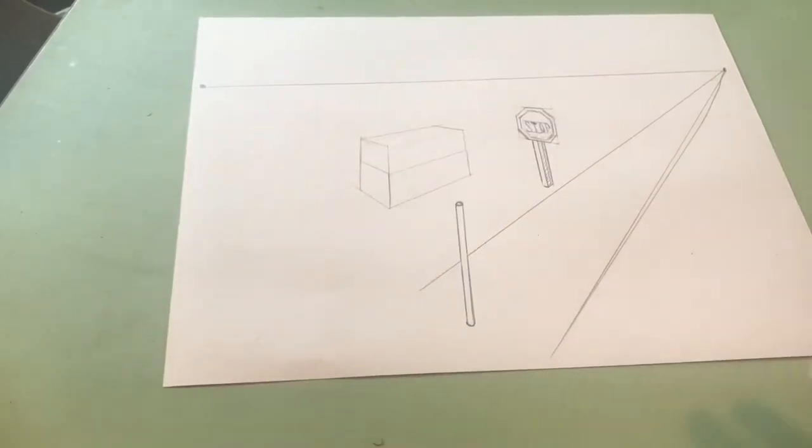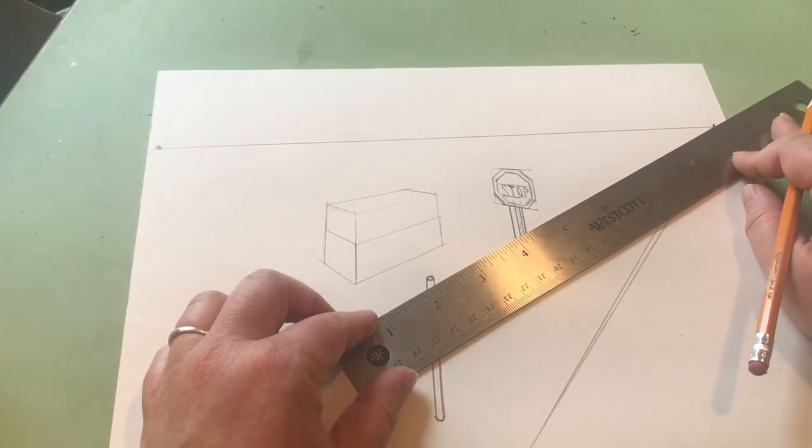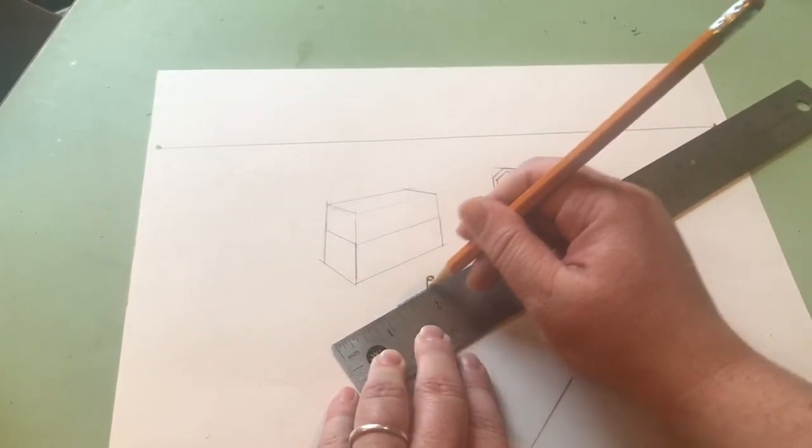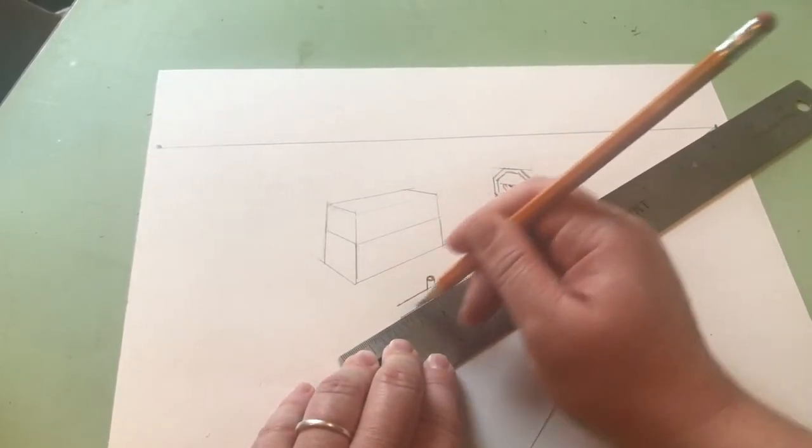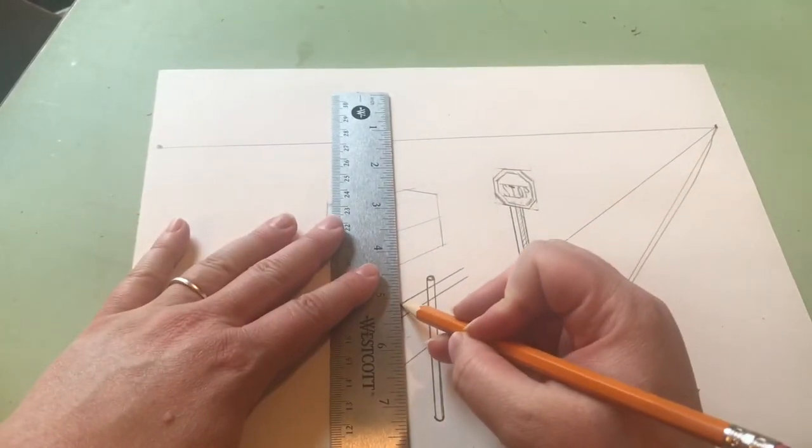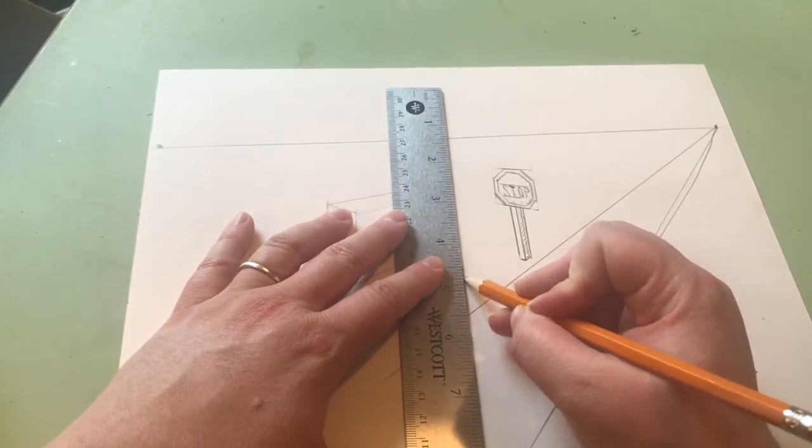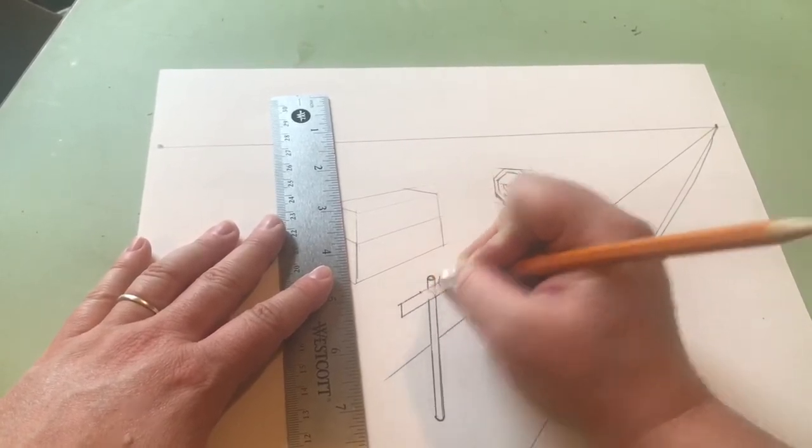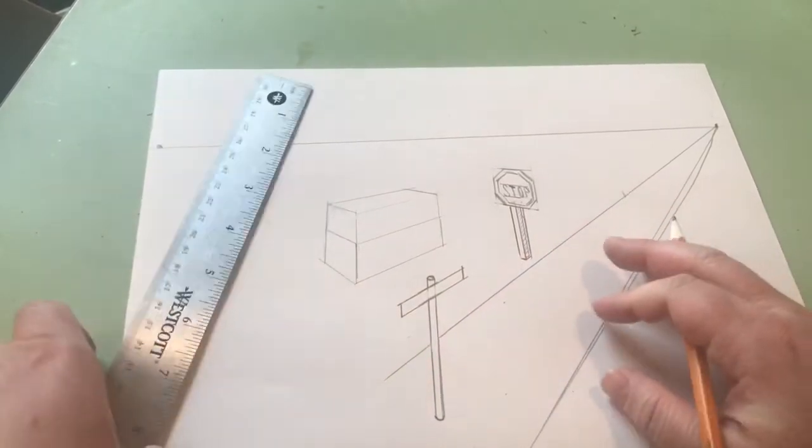Then I wanted to do a sign that goes in one direction. Use my right vanishing point to make the top and the bottom of that sign. It's really important that the right and the left sides still stay nice and vertical. Maybe that is going in front of this post.